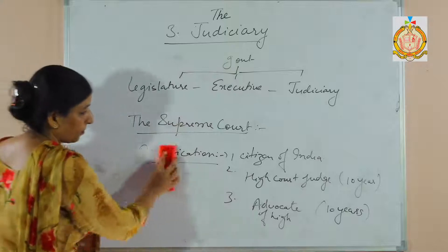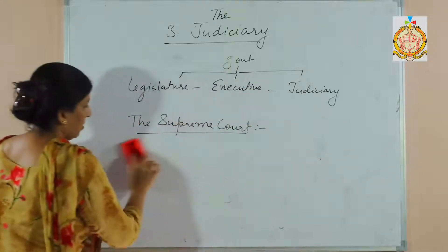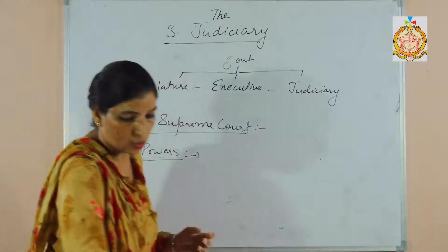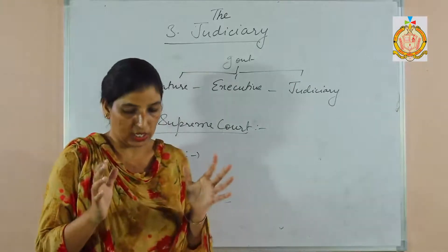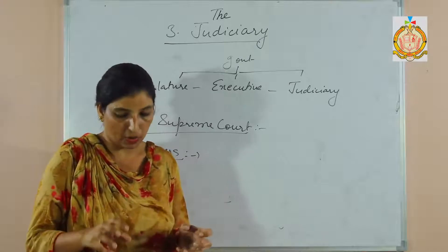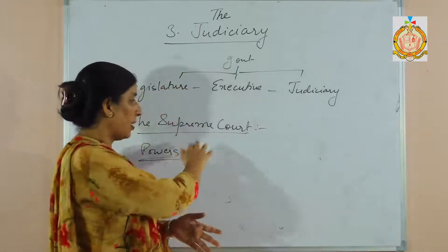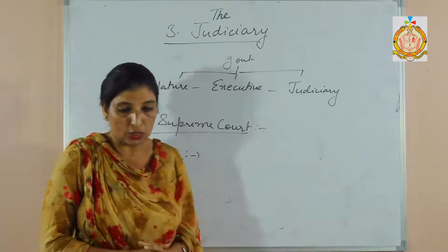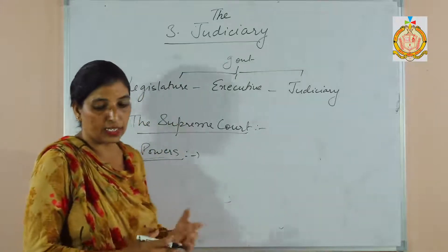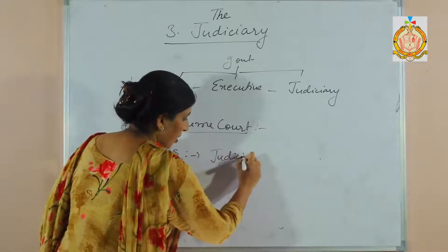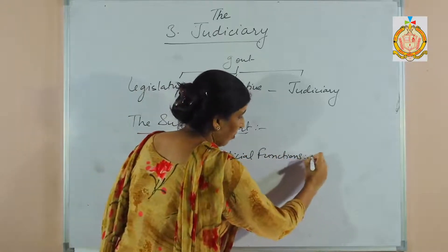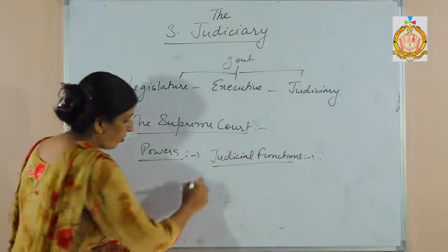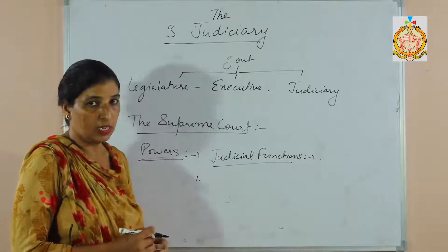Next, we will discuss the powers of the Supreme Court. The Supreme Court is the head of the judicial hierarchy — hierarchy means a system where members of an organization are ranked, with the Supreme Court on top. The powers given by the Constitution to the Supreme Court are categorized into different functions. Under judicial functions, we have original jurisdiction and appellate jurisdiction.